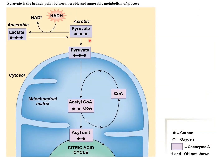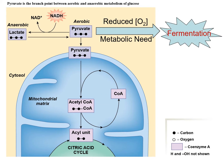Pyruvate is what we make from glucose, and we can take pyruvate and move it into the citric acid cycle by converting it to acetyl-CoA and releasing CO2. Pyruvate is the branch point. If we are aerobic, we go down this way. But if we are anaerobic, we shunt pyruvate over into fermentation. If we have reduced oxygen concentration or increased metabolic need — probably a bit of both — we shunt pyruvate into the fermentation pathway to make ATP more quickly, less efficiently, but sometimes the need for speed outweighs efficiency. With enough oxygen, we take pyruvate into the mitochondria, make acetyl-CoA, and feed the citric acid cycle.